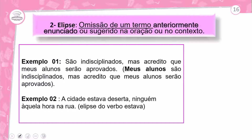Segunda classificação da figura de linguagem de sintaxe: elipse. A elipse acontece numa estrutura, numa frase, numa oração, com a omissão de um termo. A elipse está na omissão de um termo anterior ao enunciado — ou seja, a omissão de um termo antes sugerido na oração ou no contexto.